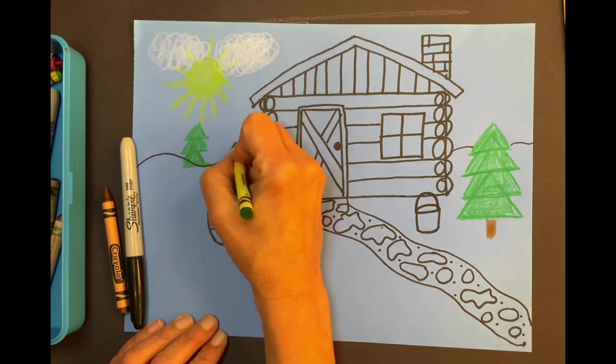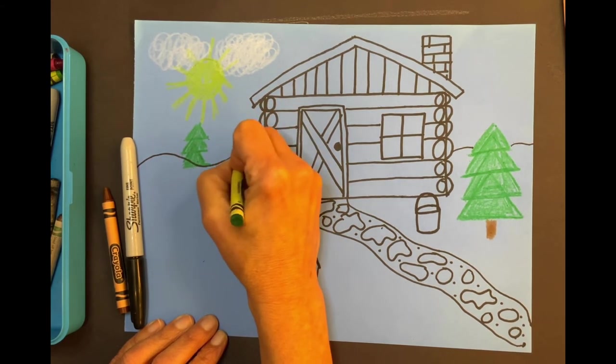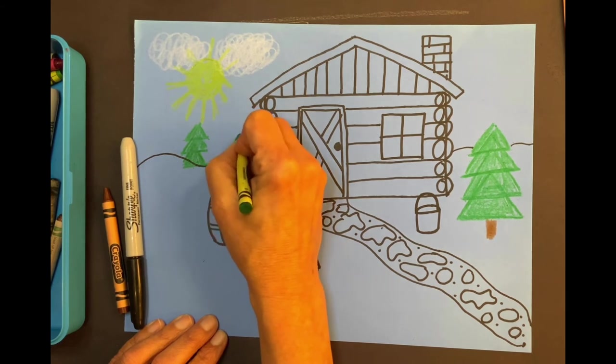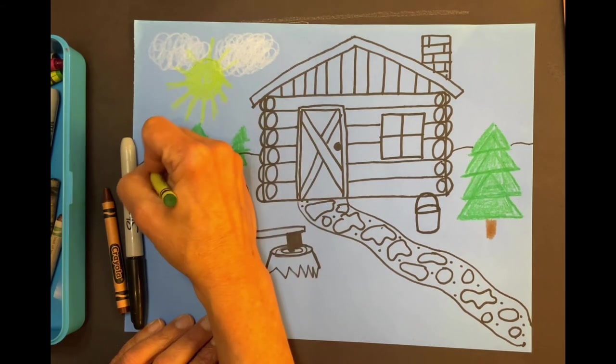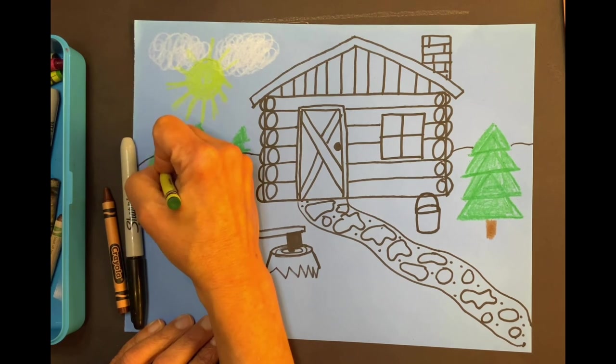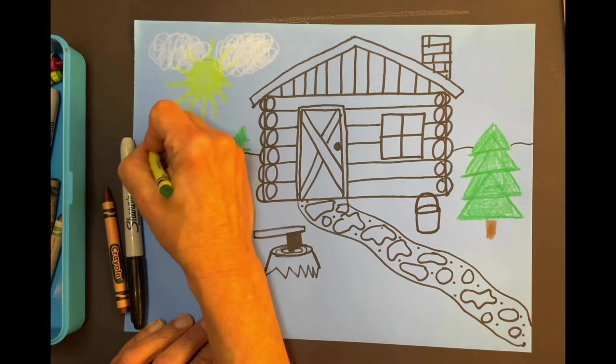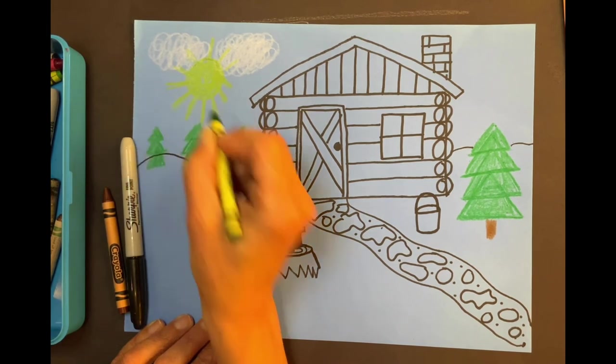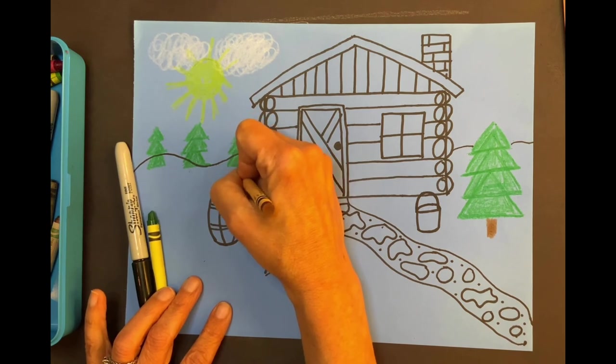And then there's a little one. You can make as many trees as you want. I'm doing it with green. So I have two evergreen trees. Now here's my third one. Great. If you just drew one tree, that's fine.